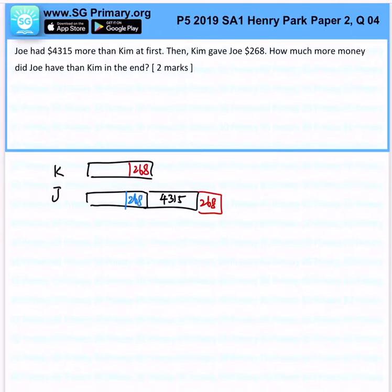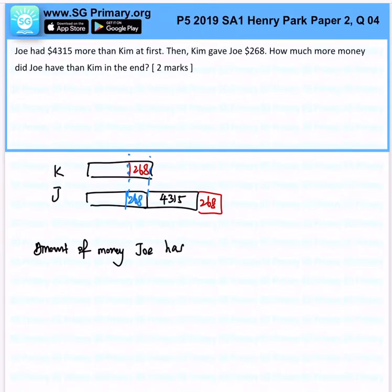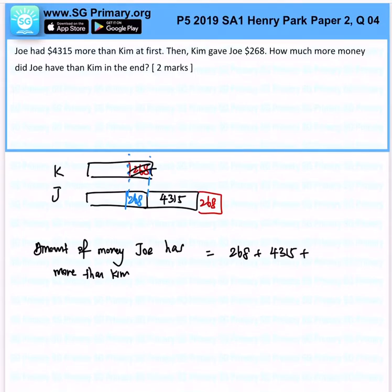You must pick up that this is actually $268 as well. At the end of the day, you'll realize that the amount of money Joe has more than Kim will be $268 plus $4,315 plus $268.